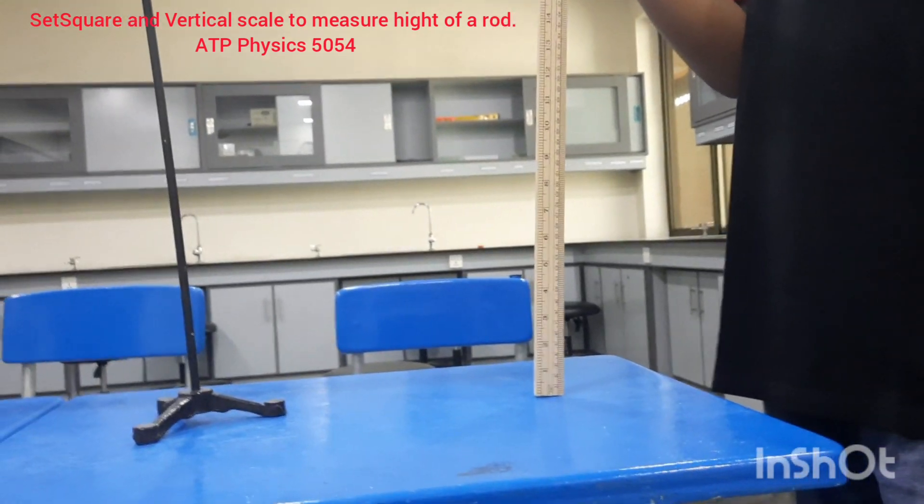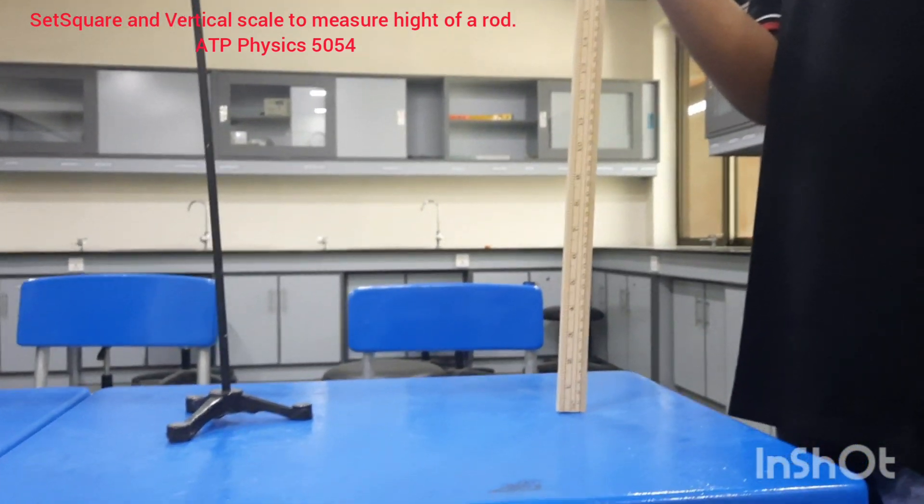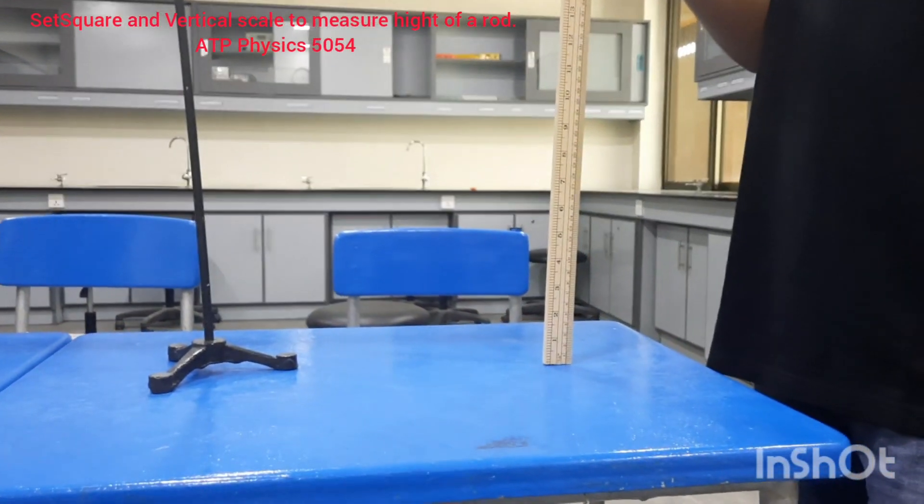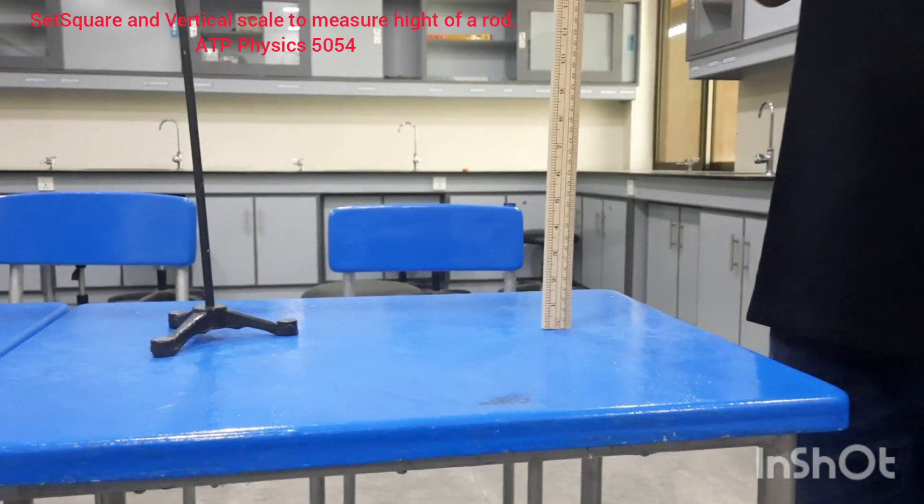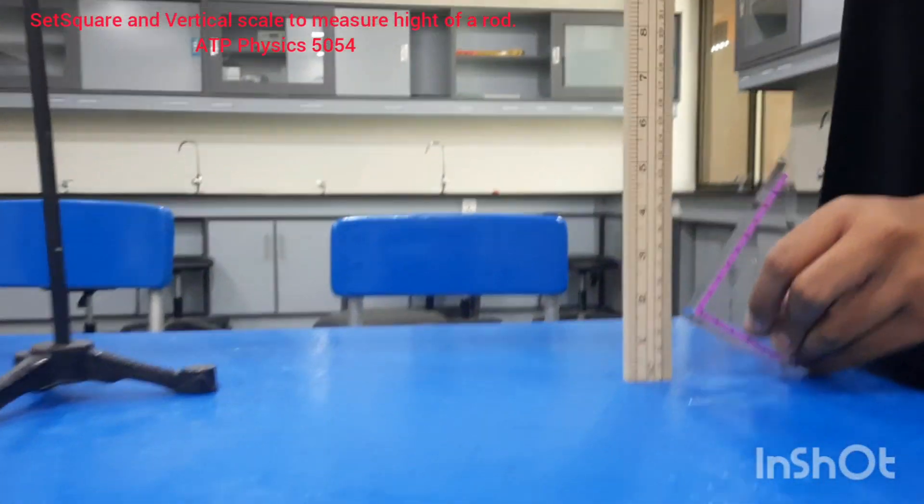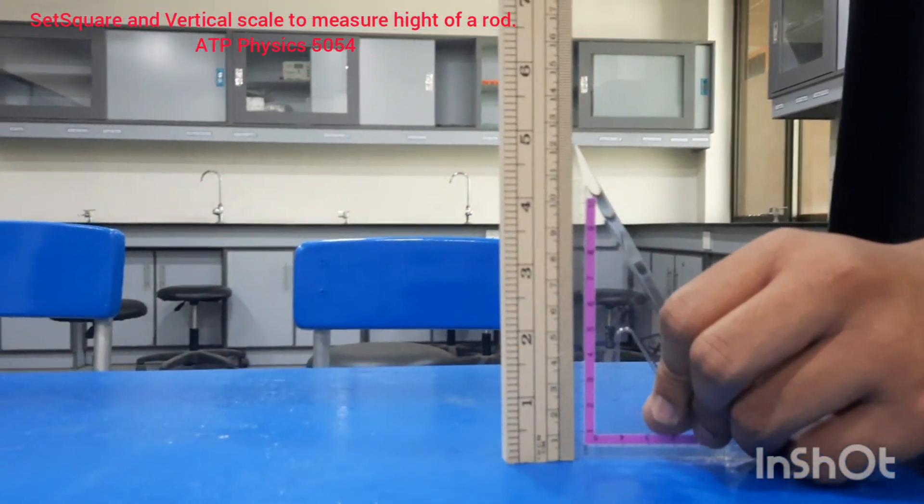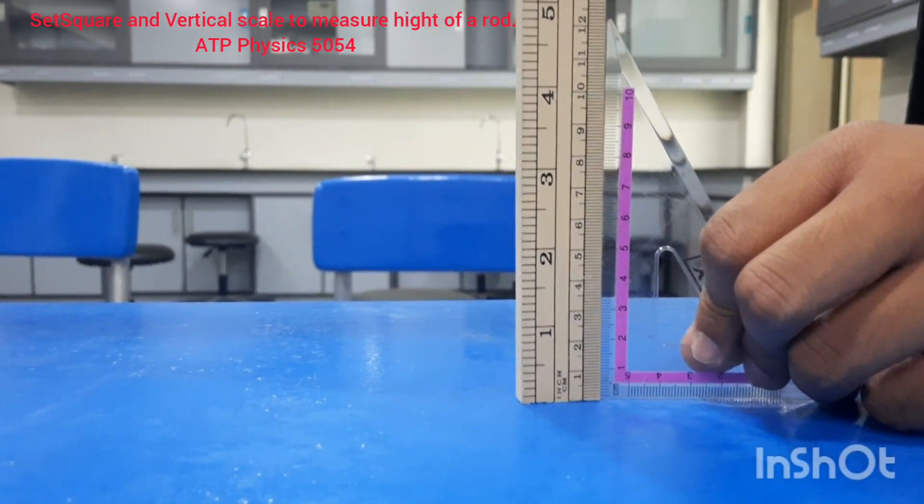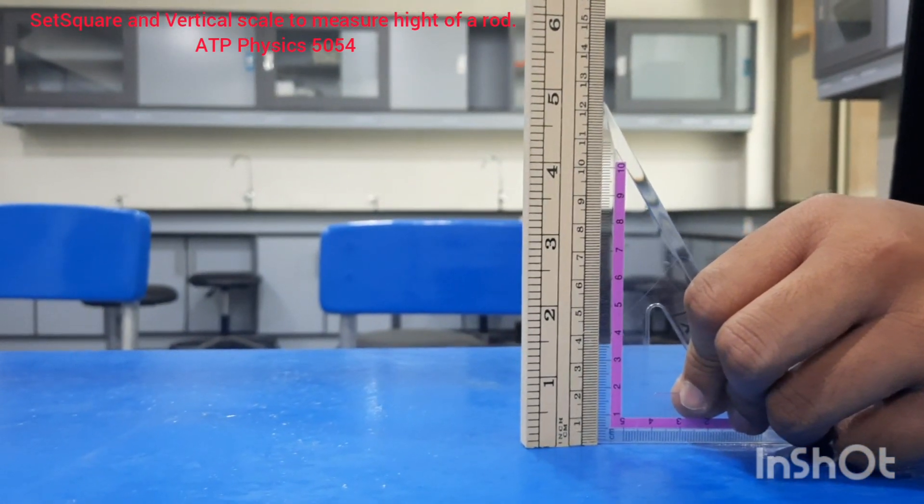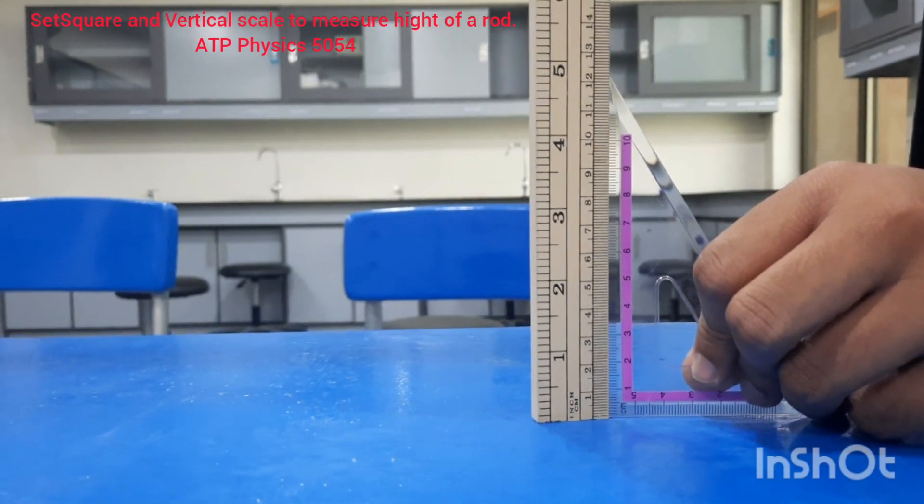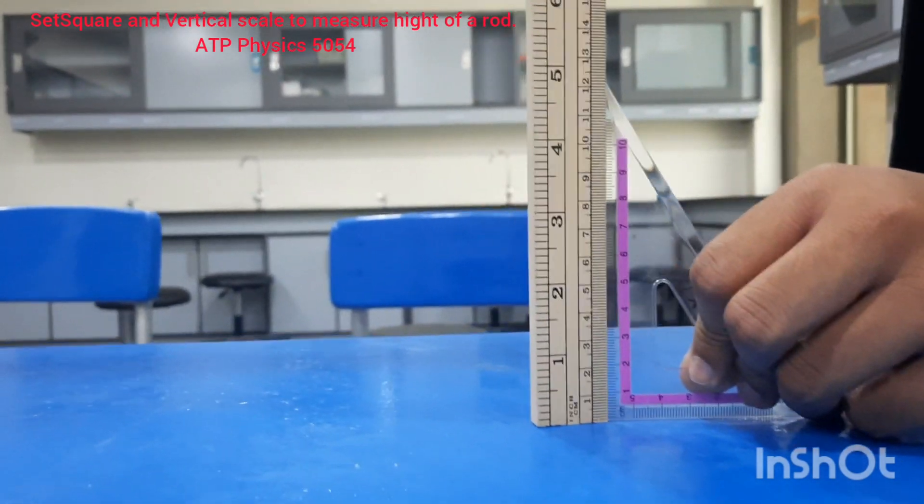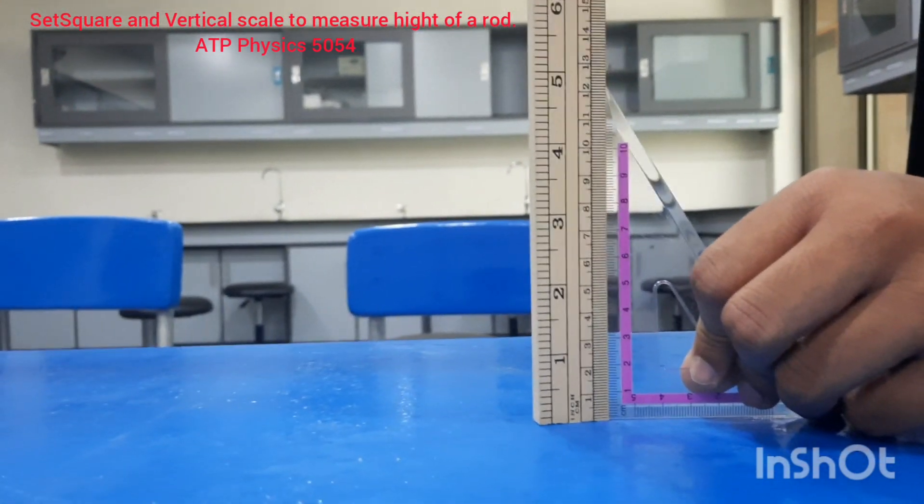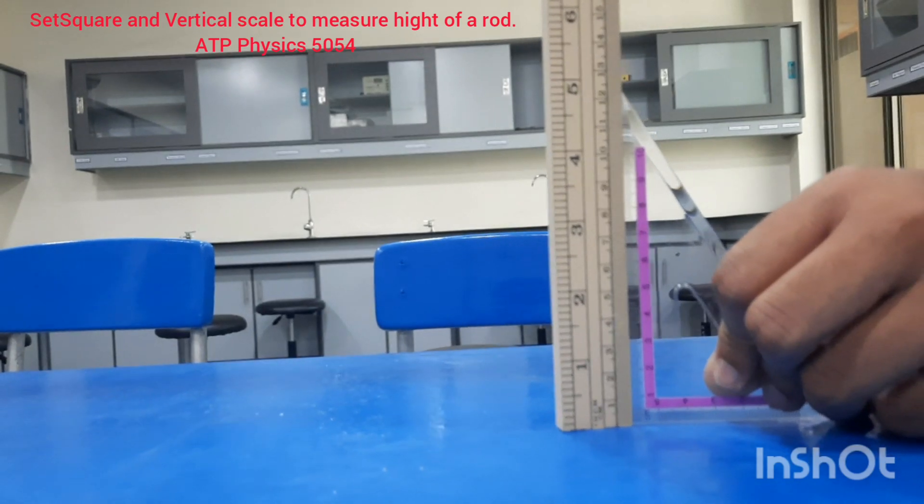To make sure that this rod is vertical to the bench, we use a set square. You see this is the set square, and the set square has two sides which are mutually perpendicular to each other. So what we do, we put those two mutually perpendicular sides of the set square, one is on the table, the other is with the vertical rod. If the vertical rod will coincide with that side exactly, then it will show that the rod is vertical to the bench.